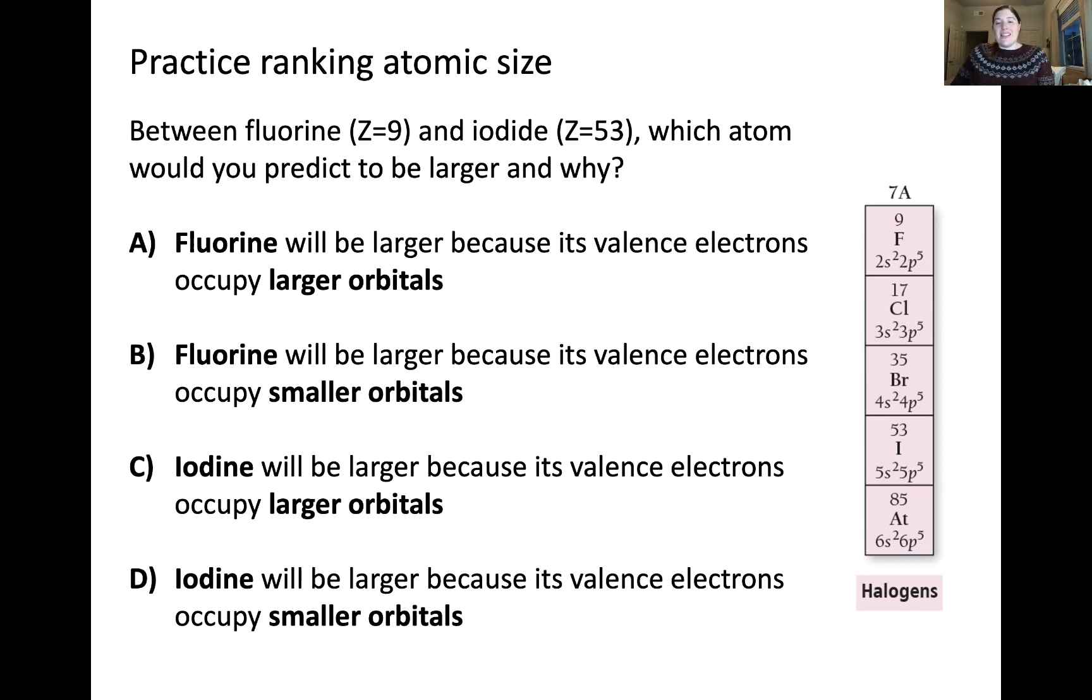So it's necessary in this case to consider the size and energy of the outermost occupied orbital. As you can see from the electron configurations given by the halogens in this graphic, the principal quantum number n increases moving down a column. We go from 2s and 2p to 3s and 3p and so on and so forth. What this means is the valence electrons in iodide occupy higher energy orbitals than that in fluorine. So in fluorine we have 2s and 2p and iodine the valence electrons occupy 5s and 5p orbitals. Thus, the valence electrons in iodine have a higher probability of residing farther from the nucleus than those in fluorine, meaning that iodine is predicted to be a larger atom. So this is answer choice C.